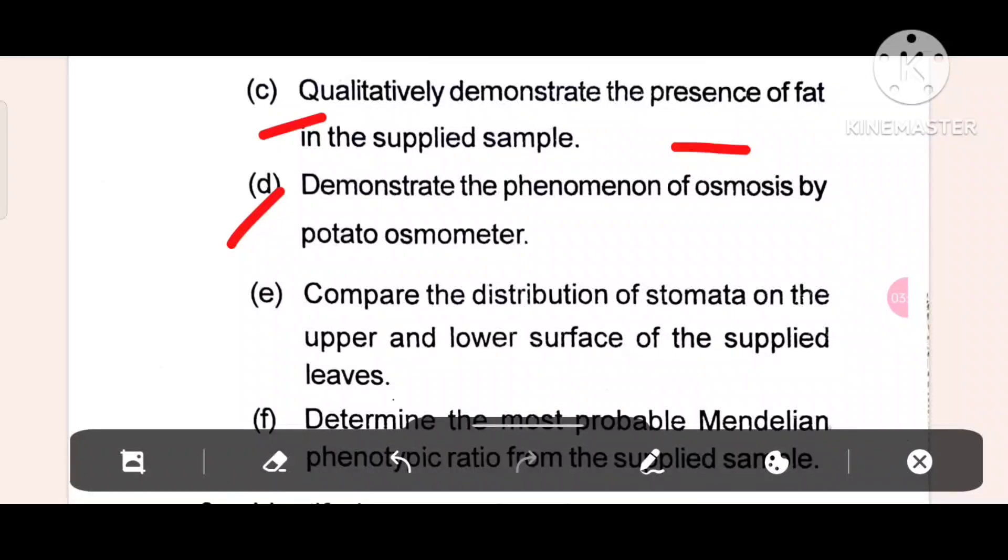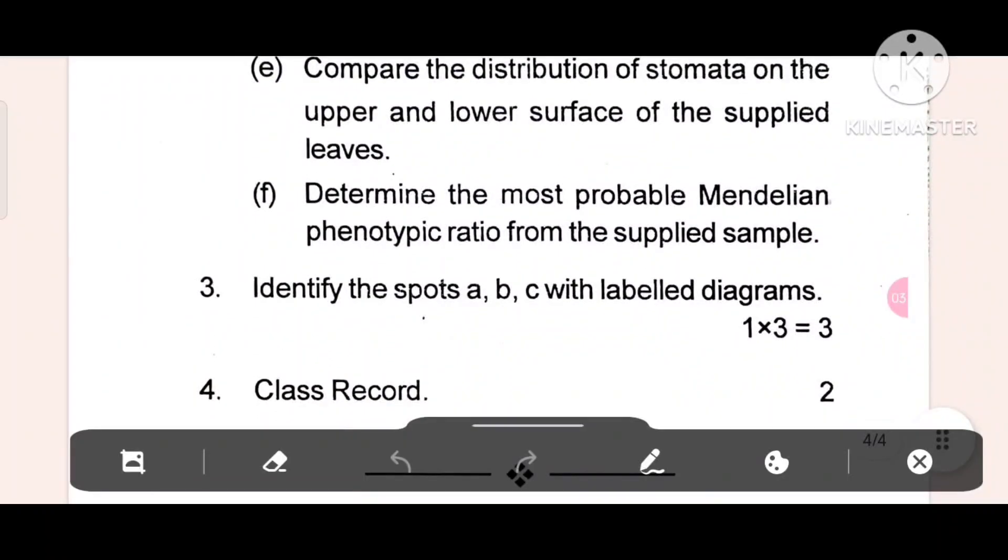Number D, demonstrate the phenomenon of osmosis by potato osmometer. Number E, compare the distribution of stomata on the upper and lower surface of the supplied leaves. Question number F, determine the most probable Mendelian phenotypic ratio from the supplied sample.